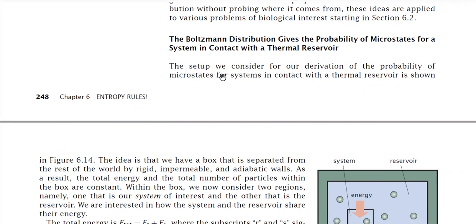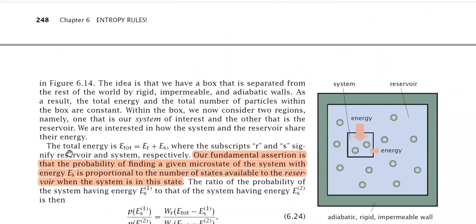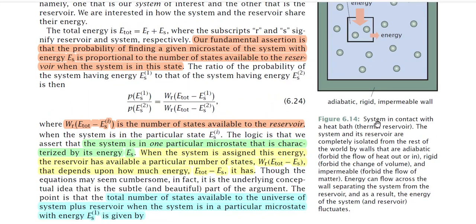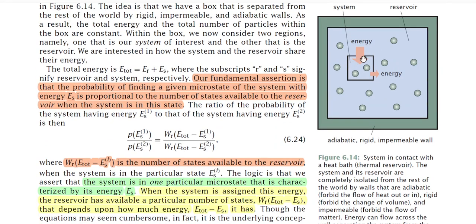The setup we consider for our derivation of the probability of microstates for systems in contact with a thermal reservoir is shown in Figure 6.14. You can see the square portion which we denote as the system, and the surrounding region as the reservoir — a system in contact with a heat bath. Energy can come into the system or flow out of the system to the reservoir.